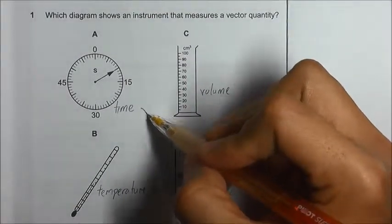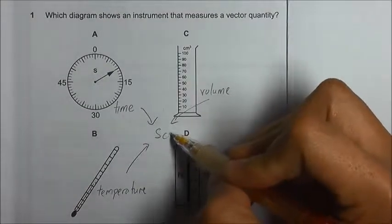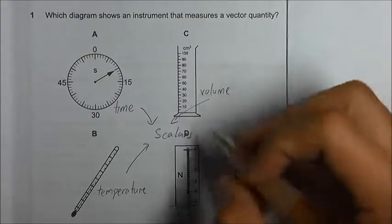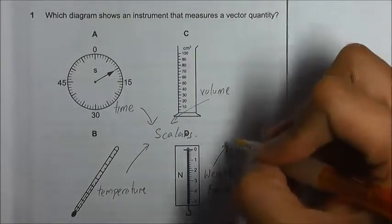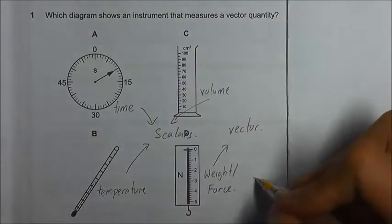Time, volume, as well as temperature - they are all scalar, and force and weight is a vector, so the answer should be D.